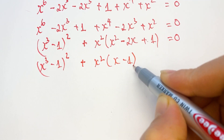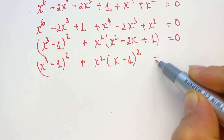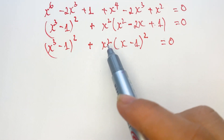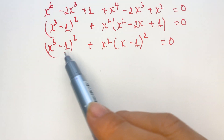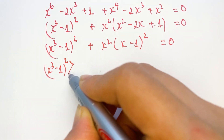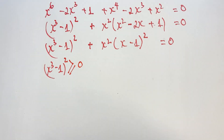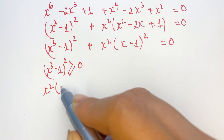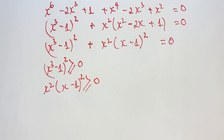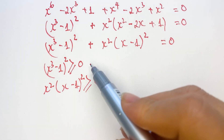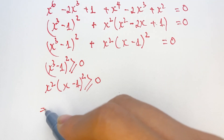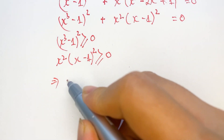So we have (x cubed minus 1) equals 0 and (x minus 1) whole squared equals 0. It's the identity, right? Everyone can see the equation. Because all terms — x squared and (x minus 1) squared — are greater than or equal to zero. They are non-negative, so they both must be zero.